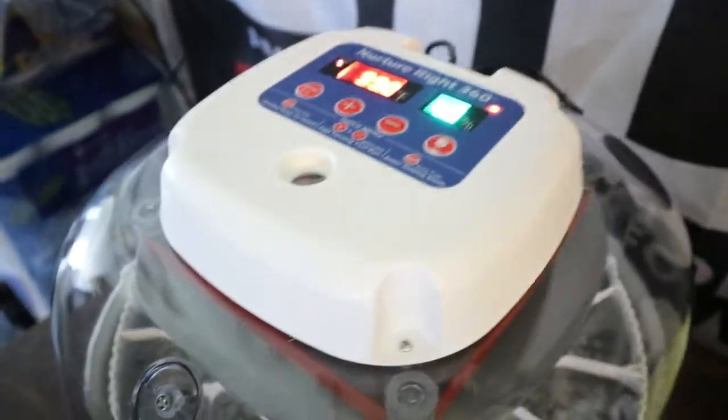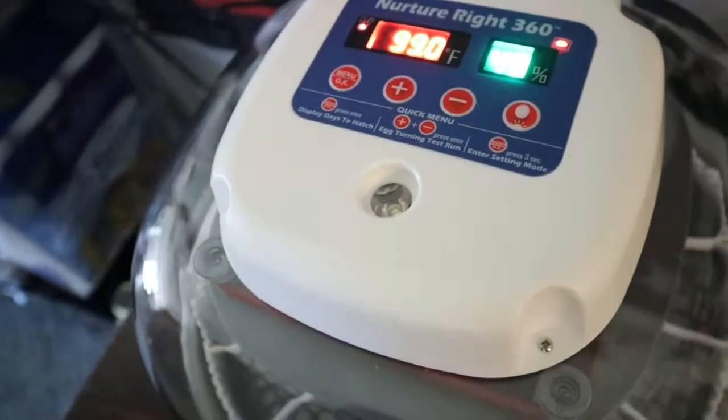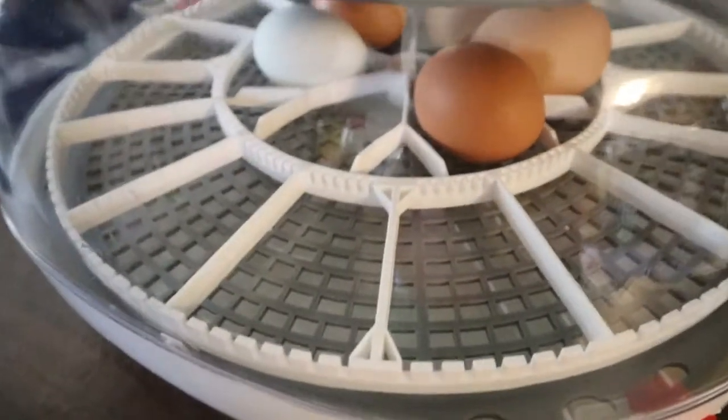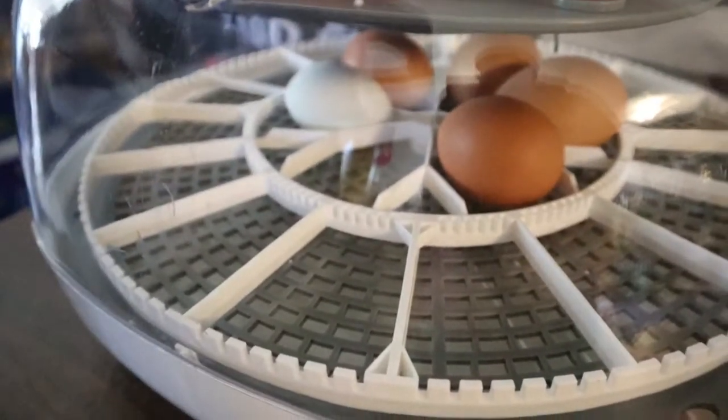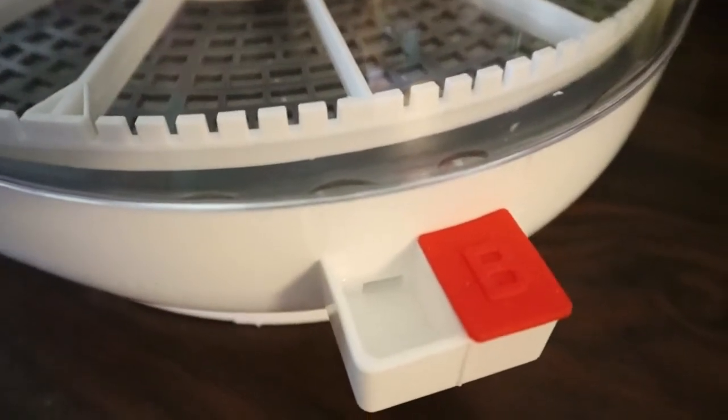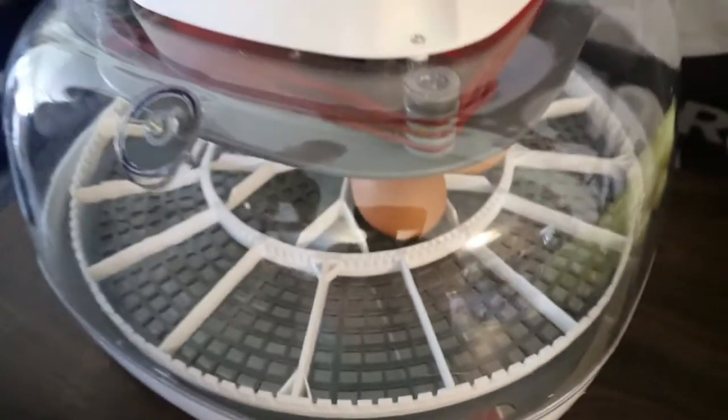And that's the 21 days. When it'll stop at 18 days, it'll stop rotating. Then we have to take out the rotator and pull out the little red button and add water, and get the humidity up to about 70 to 80 percent.